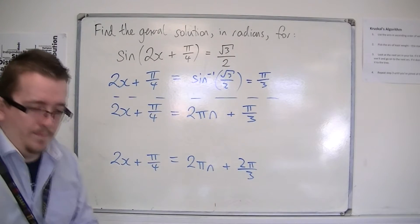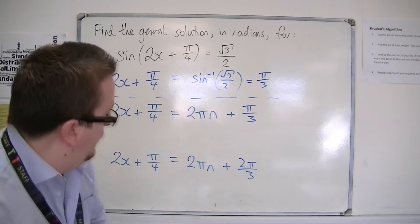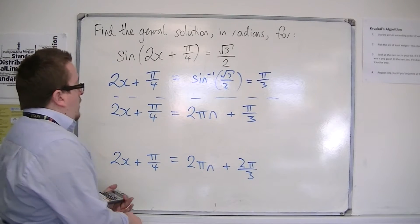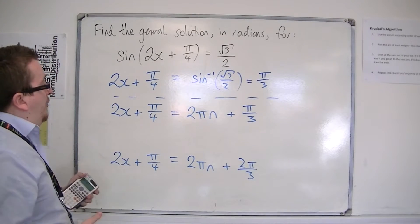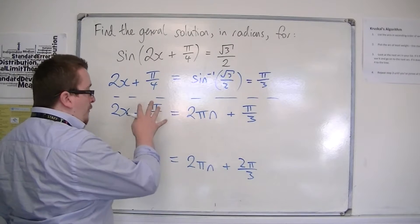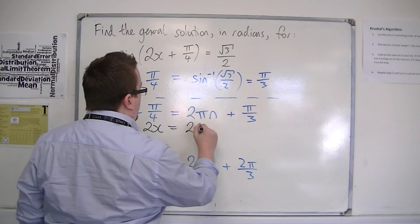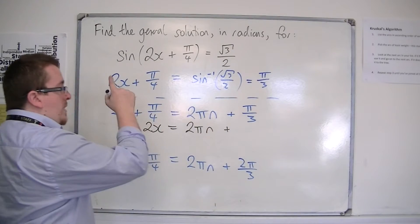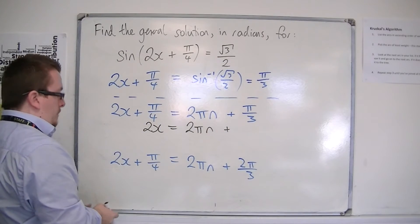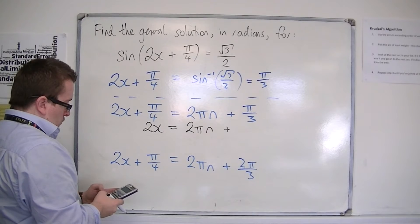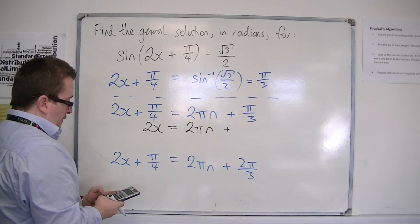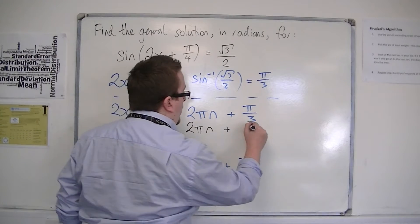Now we're ready. Working with both equations simultaneously, I can take π/4 from both sides. I'm going to get 2x = 2πn + π/3 - π/4. 1/3 take away 1/4 is 1/12, so this is π/12.